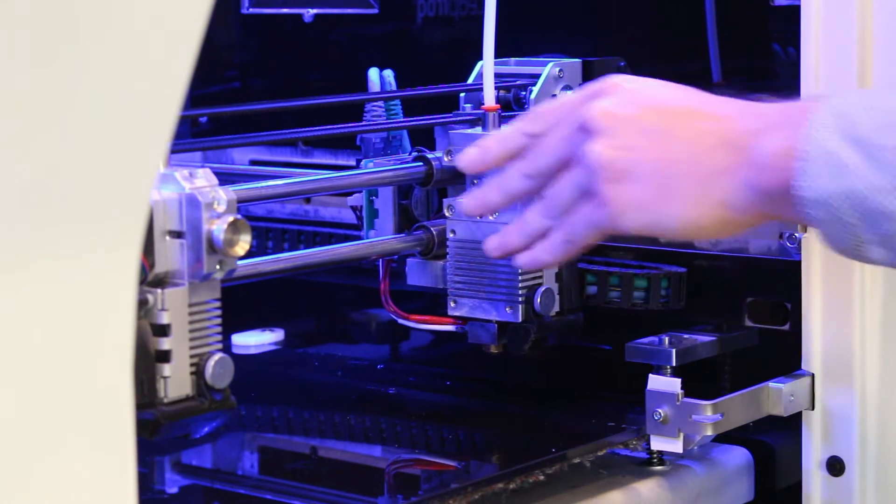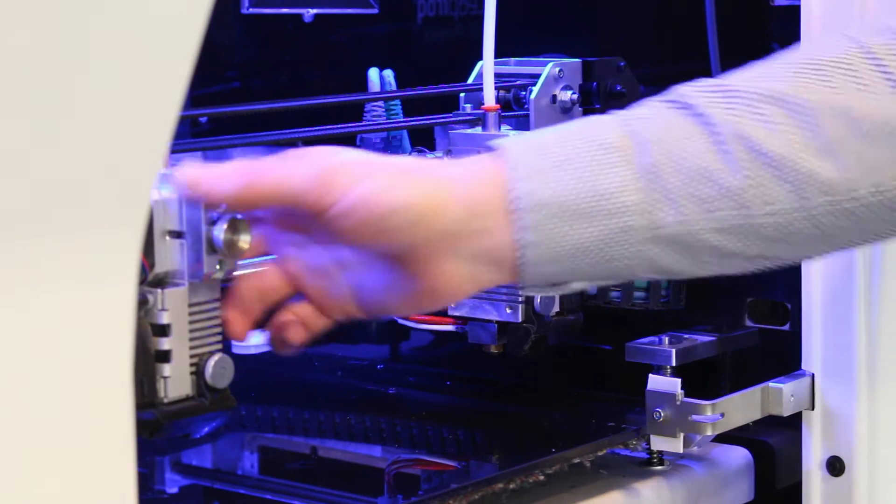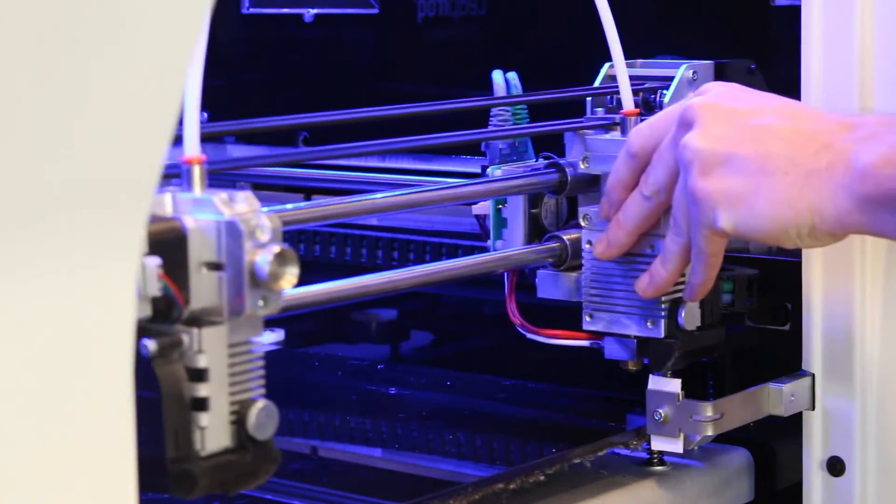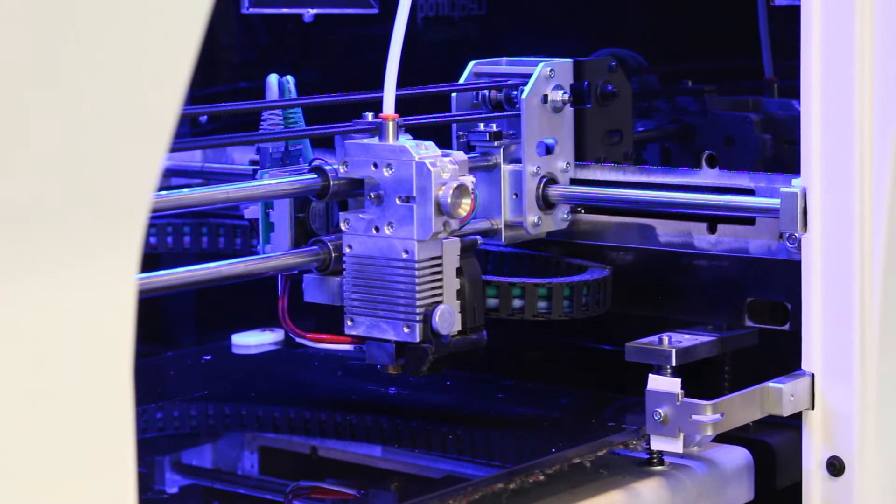Once one of your heads is finished, it moves to the side. The other head starts to print. When it's finished, the other head wipes itself before it starts printing. That way, you can have super clean, dual-color prints.